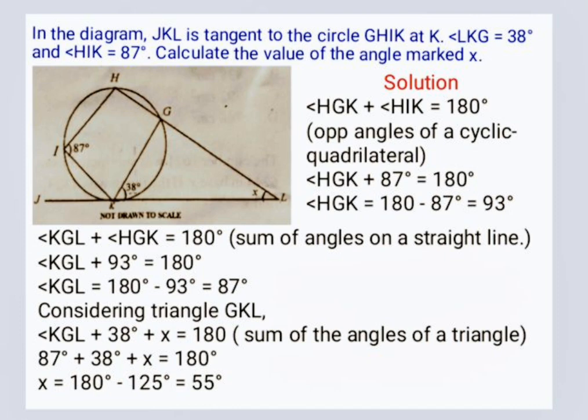is equal to 180 degrees, sum of angles of a triangle. 87 degrees plus 38 degrees plus x is equal to 180 degrees. Therefore x is equal to 180 minus 125 degrees which is 55 degrees.